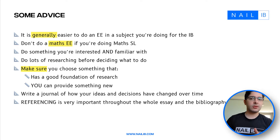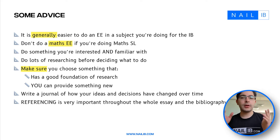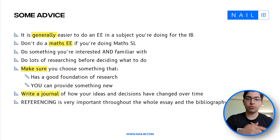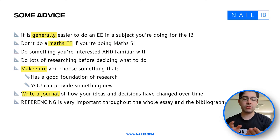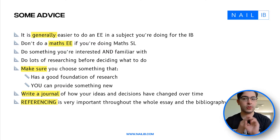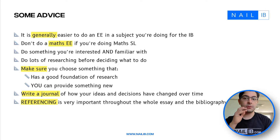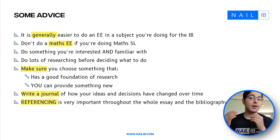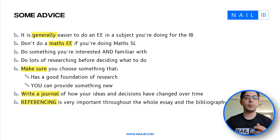If you're doing a maths EE — or any EE — I suggest writing a journal throughout the process to document how your ideas have changed, potential drafts, brainstorms, and all your decisions. When it comes time to write your reflections, you can just check the journal. Referencing is also very important throughout the whole essay — whether through in-text referencing or footnotes, just be consistent. You also need a bibliography at the end. Keep all websites, articles, and books in a safe place so you can reference them later.